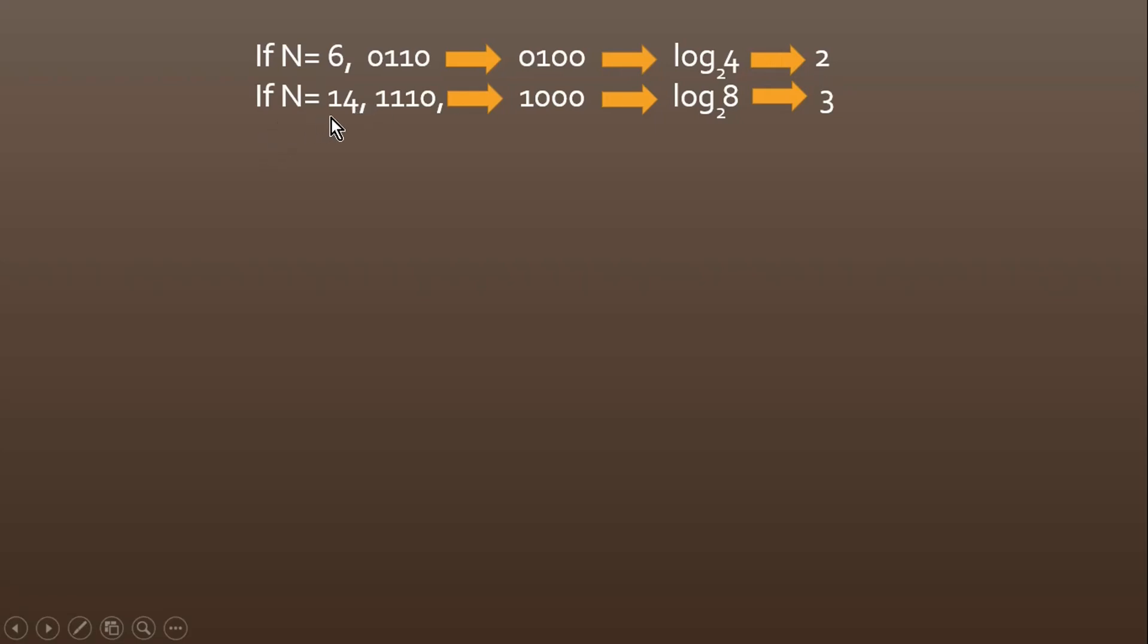Now let us consider the second example, when N was 14. Let us convert 14 into binary, it will be 1110. Now we need to form 2^m, which would be nearest and less than or equal to 14. Again, as the thumb rule I told you, convert all the 1s into 0s except the MSB 1, so it will become 1000, which is 8. So log₂ 8 equals 3. This is my final output.